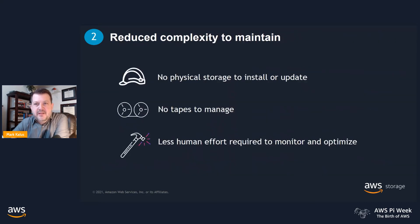The second major benefit of S3 and Glacier for backups is the reduced complexity involved in overseeing and maintaining your overall backup solution. Because S3 and Glacier are in the cloud, the obligations of handling physical storage go away. This means no more upgrading, patching, and replacing of your hardware, software, or networking — and of course, you no longer have to deal with physical tapes. Because S3 and Glacier scale up or down automatically as needed, you can spend less human effort on things like monitoring capacity, which frees you up to focus on other things that add value to your business.